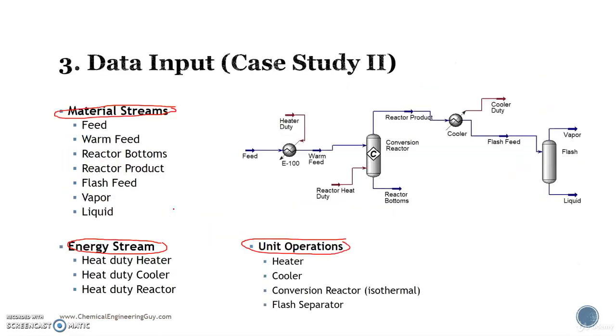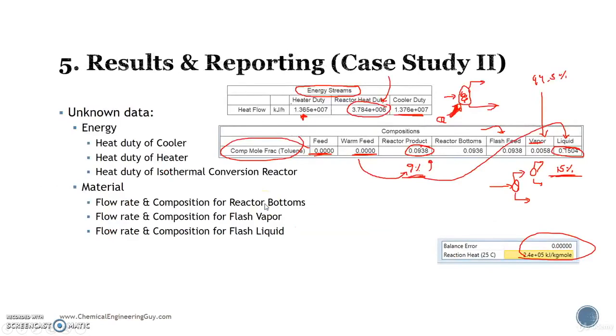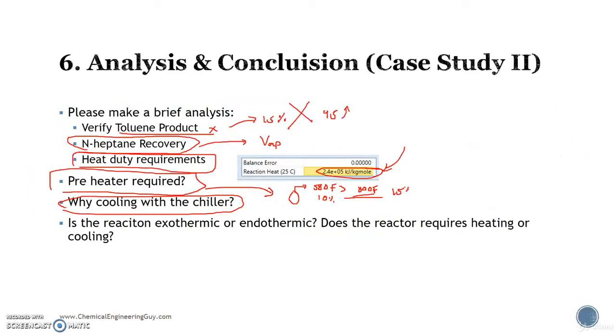Why cooling? Well, maybe because we get a better separation. Actually, that would be a nice way to prove if maybe cooling even lower will separate better the liquid, or maybe we can achieve something. For instance, 100 Fahrenheit will provide a purer toluene flow. Anyways, that's for another set of practice.